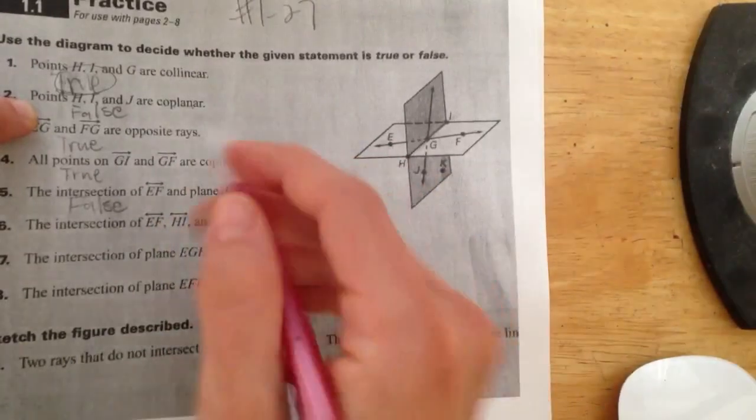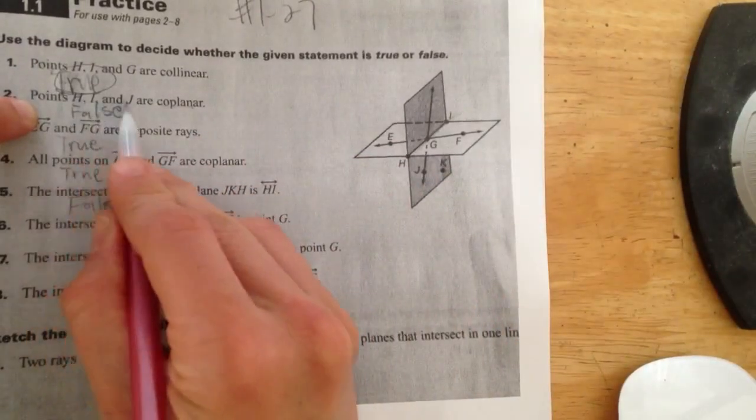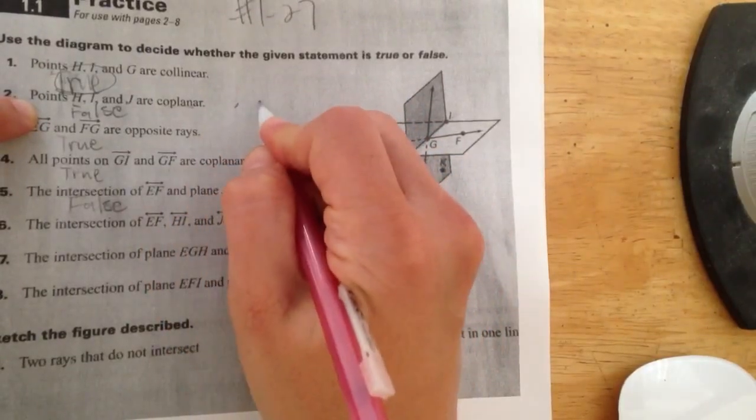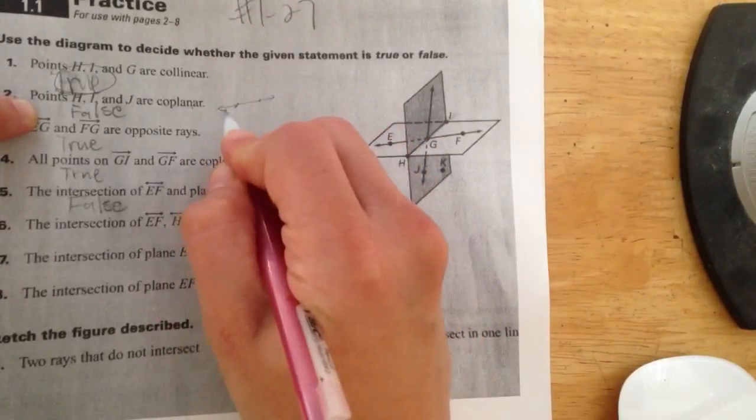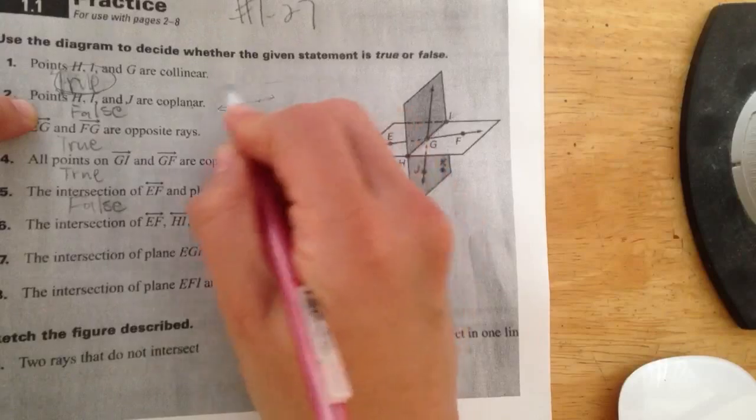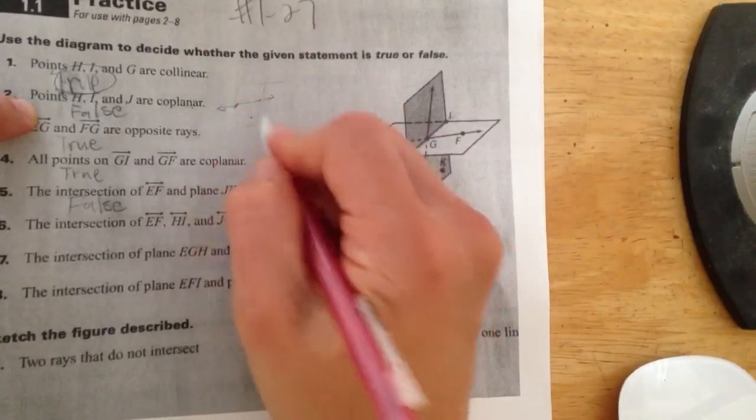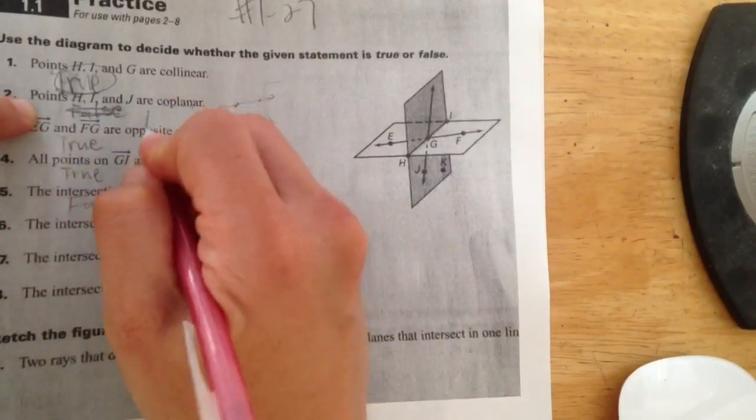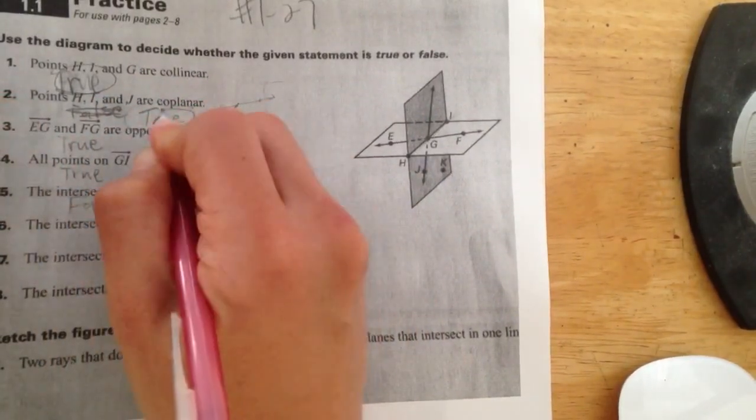Now, I didn't even have to look at the diagram, though, because I know that any three points will always make up a plane. Just like if I had two points, I could always draw a line through it. If I have three points, I could always draw a plane through them. So three points will always be coplanar, so this is true.